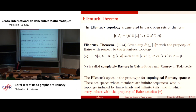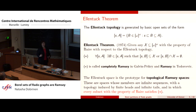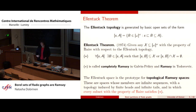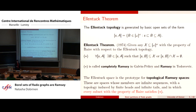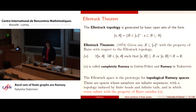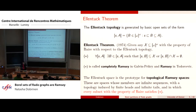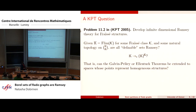Topological Ramsey spaces are roughly spaces where you have members which are infinite sequences analogous to ω, with a topology induced by Ellentuck-like basic open sets with finite heads and infinite tails, and every subset with the property of Baire satisfies the star relation. Any structure appearing as members of a topological Ramsey space will satisfy this — but there are not that many known. That's the problem.